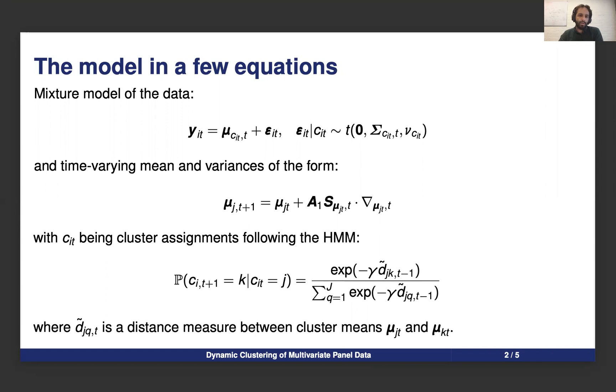We also propose a few extensions to this model, such as heterogeneity across variables and clusters by adding some flexibility to matrix A, sticky transitions by adding buffer states to the Hidden Markov chain, and we can also add explanatory variables in the transition probabilities, so we can have more than just the distance.